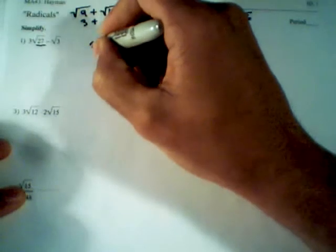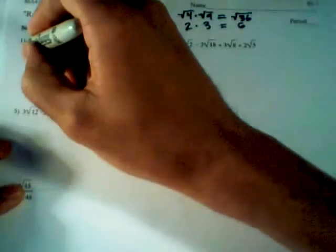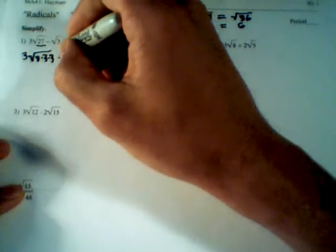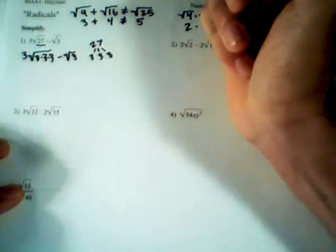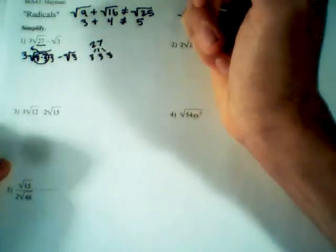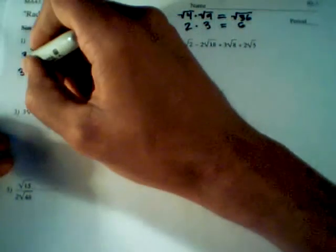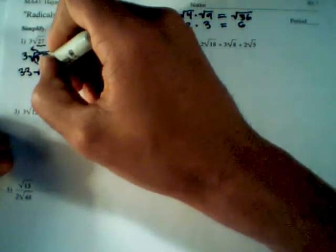We make our little factor trees off to the side. We simplify 27 first — 27 can be written as 3 times 3 times 3. So instead of 3 root 27, we can write 3 root of 3 times 3 times 3, minus root 3. The square root unsquares, so we can unsquare one pair of 3s. The remaining 3 is not being squared, so we can't unsquare it. We're left with the 3 that was already outside, times the unsquared 3, with one 3 remaining underneath.